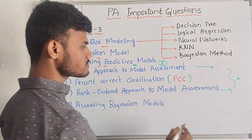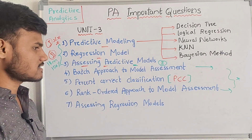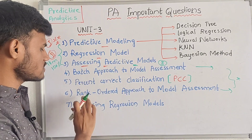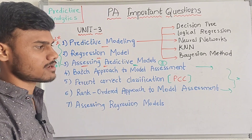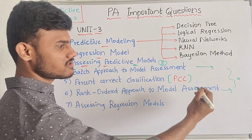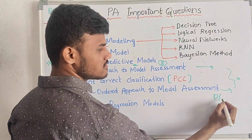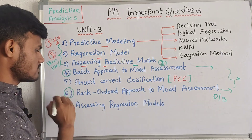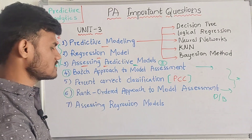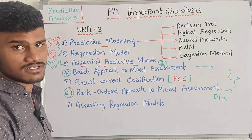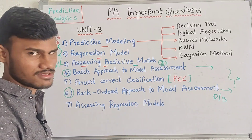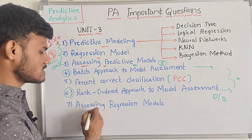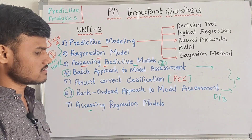We have two approaches: Batch Approach for Model Assessment and Rank Ordered Approach to Model Assessment. The differences are also important — difference between these questions. This covers the fourth and sixth questions — percent correct classification is one model concept. The last thing is Assigning of Regression Models.